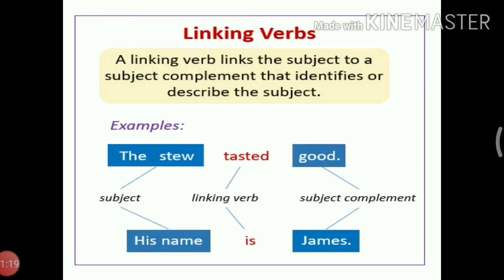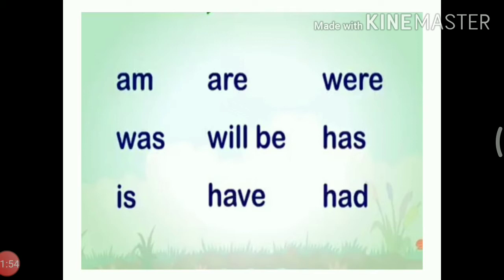Number 2: Linking verbs. A linking verb links the subject to a subject complement that identifies or describes the subject. Examples: The stew tasted good. His name is James. The words tasted and is are linking verbs. Some more linking verbs are am, are, were, was, will be, has, is, have, had.